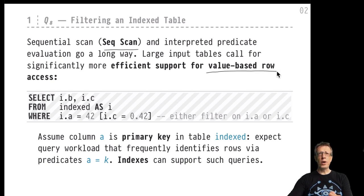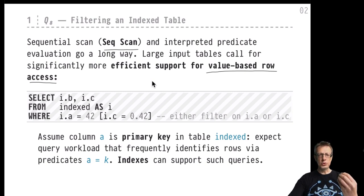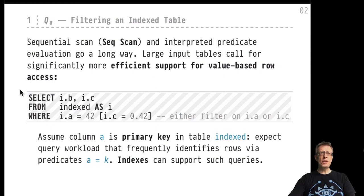We need efficient support for the evaluation of such predicates and thus for efficient value-based row access. Row access in relational database systems can be done by row ID, but user queries won't specify row IDs - they will specify predicates that restrict or constrain values in columns. Such queries will be used as the probe queries in this chapter. This is probe query Q8, and the predicate is i.a equals 42.